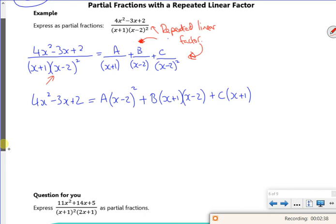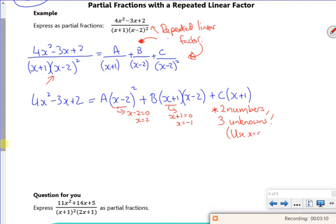Right, so quick double check. I've got x minus 2 is 0, so x is 2. I've got an x plus 1 is 0, I've got x is minus 1. I've got an issue here though, because I've got two numbers, but three unknowns. So what I'm going to do is I'm going to use x is 0 as well. You can use any number you want, but you'd be pretty daft using x is 1,736. Now I'm going to go with x is 0.